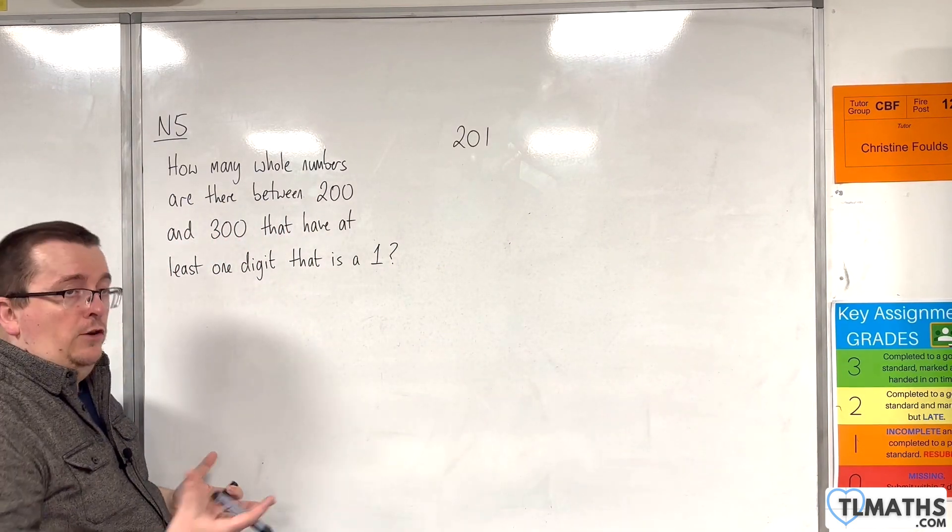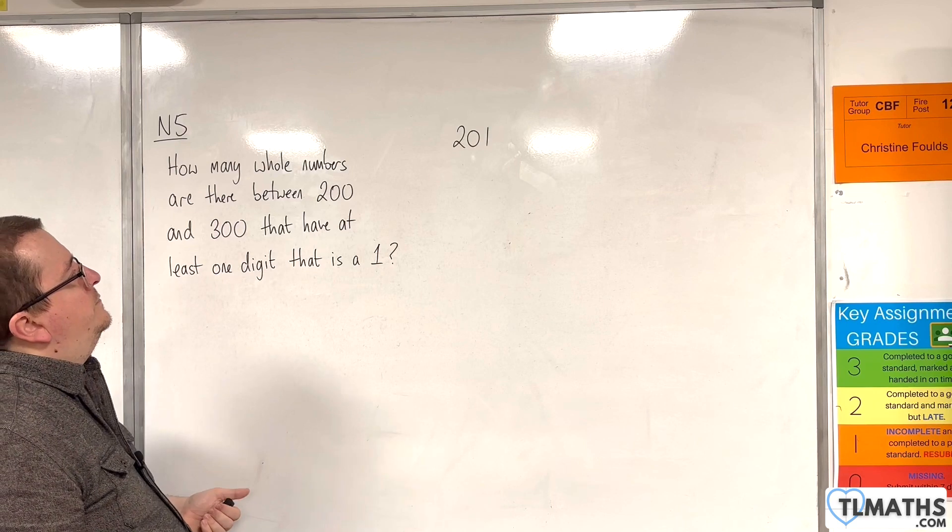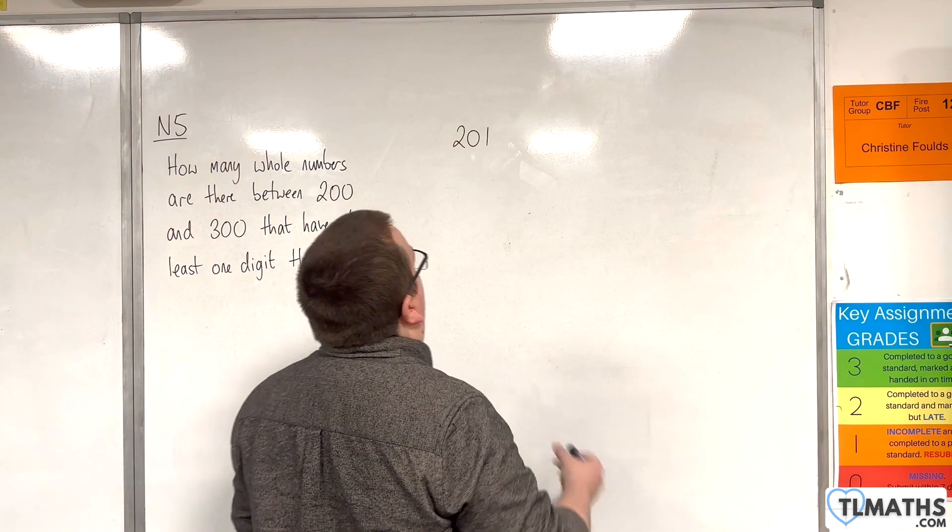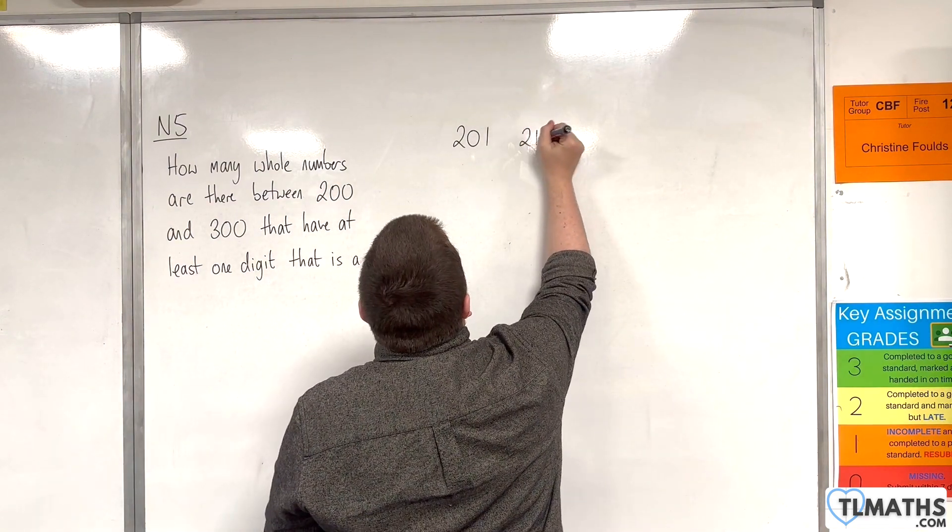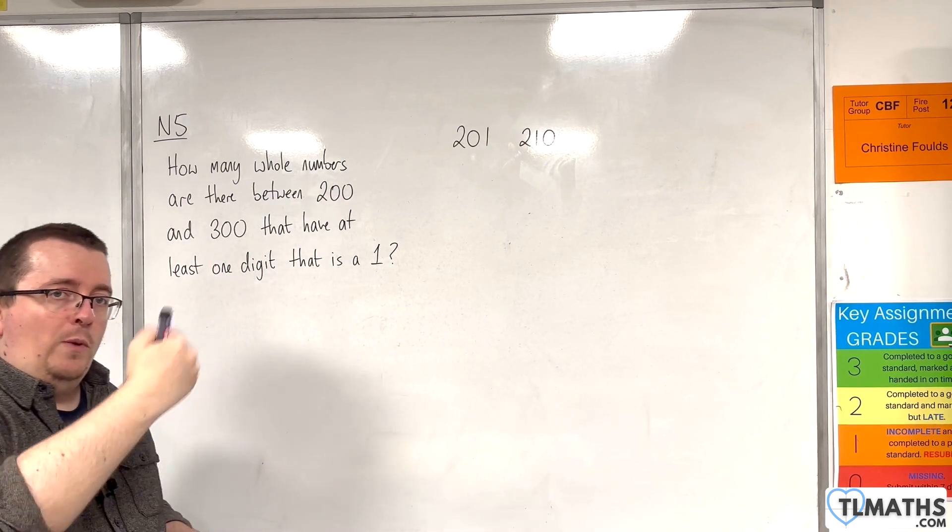But of course, it won't appear in the hundreds column because we're just looking at numbers between 200 and 300. So we can start listing them. The next one would be 210 because we go 202, 203, 204, all the way up to 210.